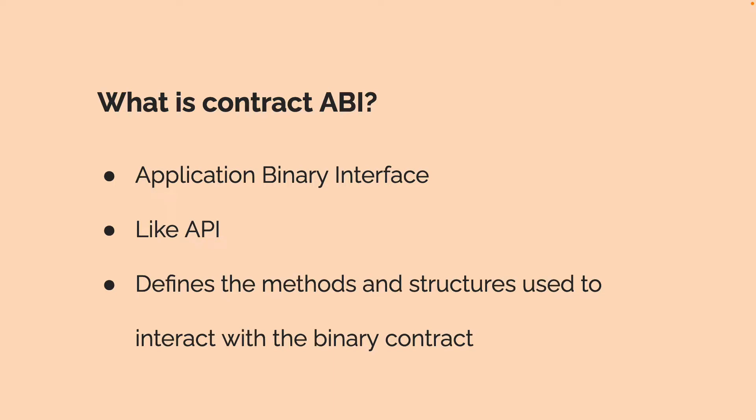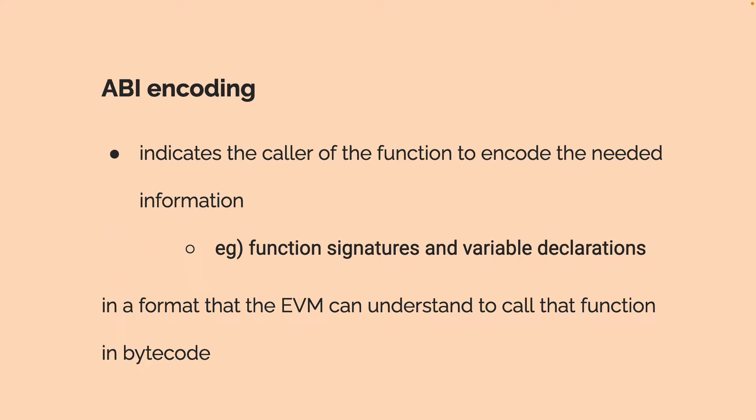A contract ABI is the application binary interface, similar to an API, an application programming interface. The ABI defines the methods and structures used to interact with the binary contract. ABI encoding indicates the caller of the function to encode the needed information like a function signature and variables. This encoding is encoded into a format that the EVM can understand to call the function in bytecode.